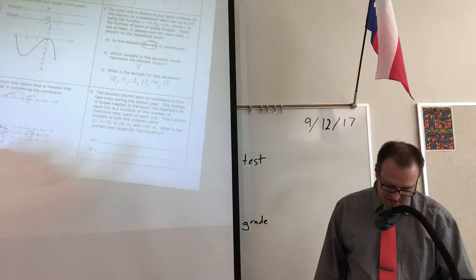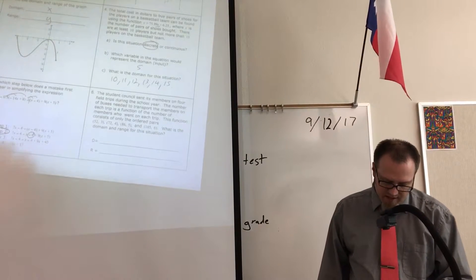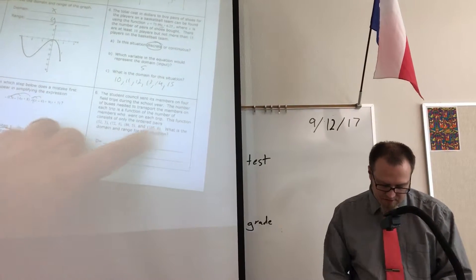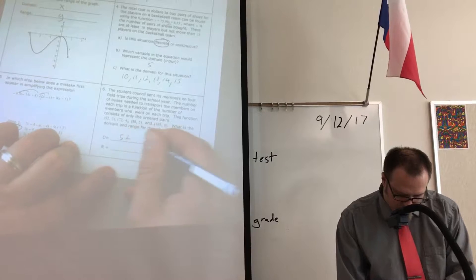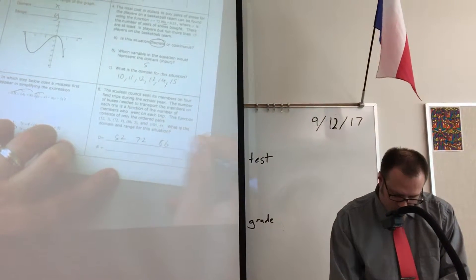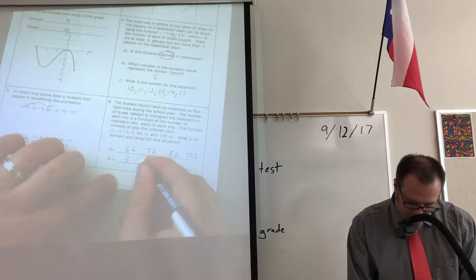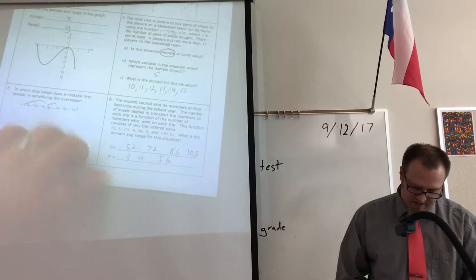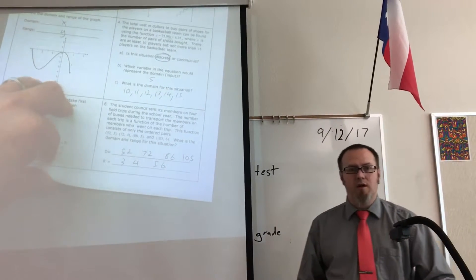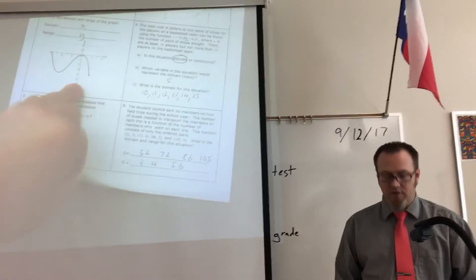On number six, this is discrete again, so the domain is going to be a list of those X values in order, 52, 72, 86, 105, and then the range is going to be again a list in order, 3, 4, 5, 6. It was trips. You can't take half a trip. You either went or you didn't go.